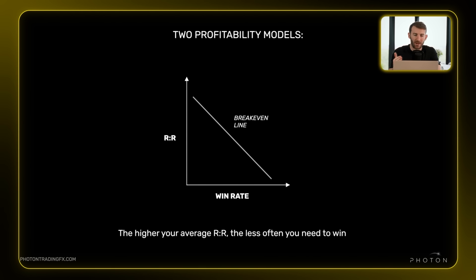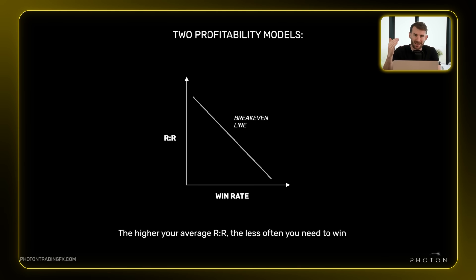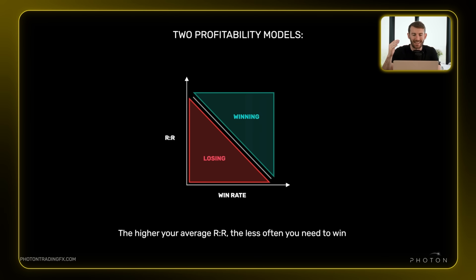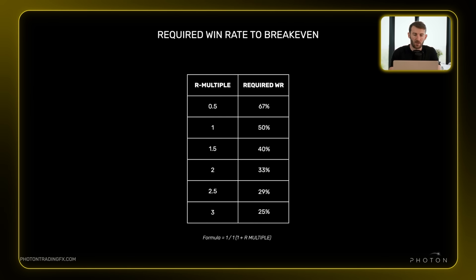This is another way to visualize where that breakeven line is. If you have a higher risk reward with bigger winners, your win rate can be much lower to break even or be profitable. If you have a really high win rate, that generally comes at the sacrifice of risk reward, because it's very hard to have both high. We want to be on the right hand side of that breakeven line. To be specific, if you average a 3R multiple you only need a 25% win rate to breakeven — the formula is shown below if you want to calculate it yourself.